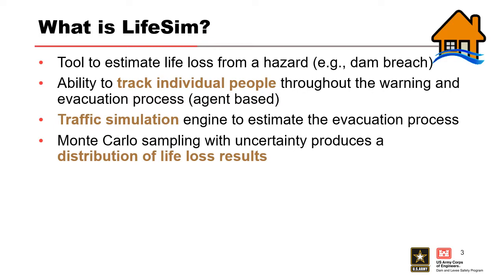This model has the ability to model traffic, model the densities on roads, and capture people where they could potentially be getting caught. Monte Carlo sampling of uncertain parameters is also featured. As we saw from case histories, there is a lot of uncertainty in what can happen. You can enter parameters into LifeSIM with uncertainty, and it runs Monte Carlo to give you a distribution of life-loss results.